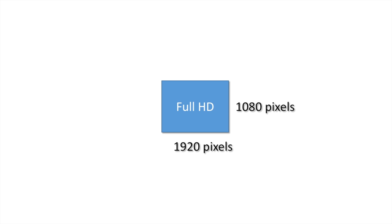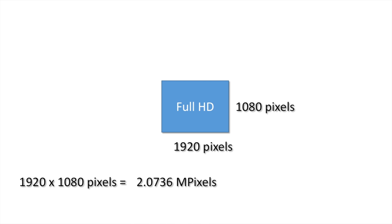If you take an image or a video and you put it on the internet or use it on a computer, then realistically the highest resolution you're going to get is full HD — 1080 by 1920 — which comes out at approximately just over two megapixels. Most modern cameras will have a megapixel count higher than two megapixels.